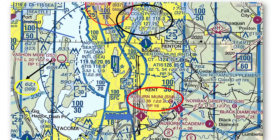The star inside the green diamond indicates that a rotating airport beacon is in operation from sunrise to sunset at the airport indicated. See the number 25 surrounded in the dashed box. This indicates the ceiling of the Class D airspace surrounding Renton Municipal Airport.